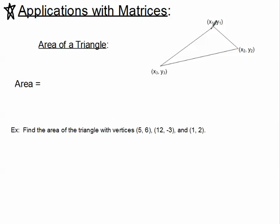We're looking at a triangle here and I've given it three ordered pairs, generically x1, y1, x2, y2, and x3, y3.